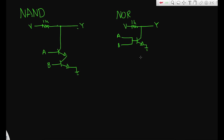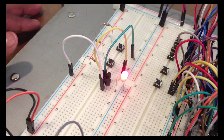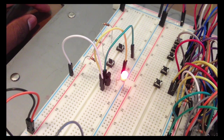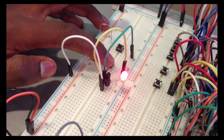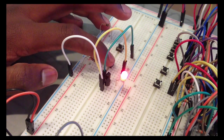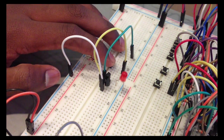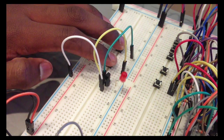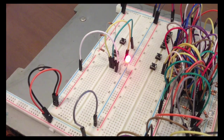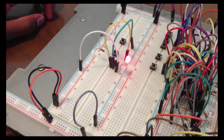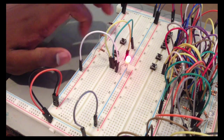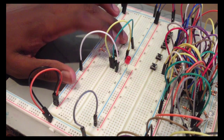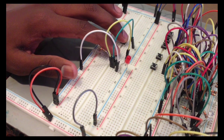We can take a look at these on the breadboard. This is a NAND gate: when both inputs are false, output is true; when only one input is true, output is true; when both inputs are true, output is false. Now this is a NOR gate: when both inputs are false, output is true; when one input is true, output is false; and when both inputs are true, output is false.